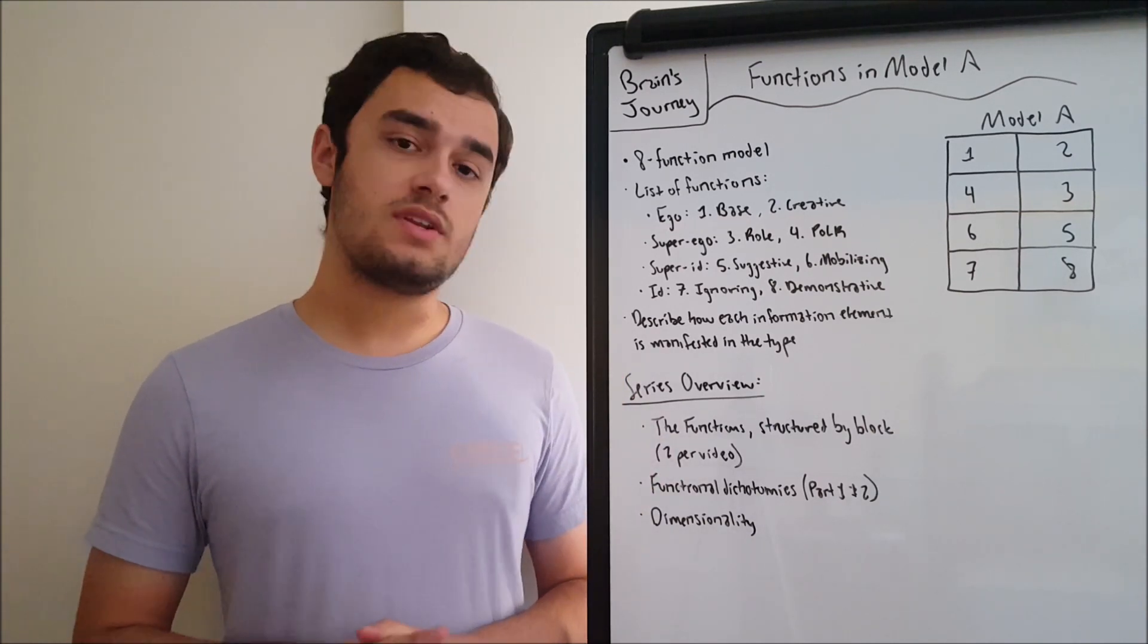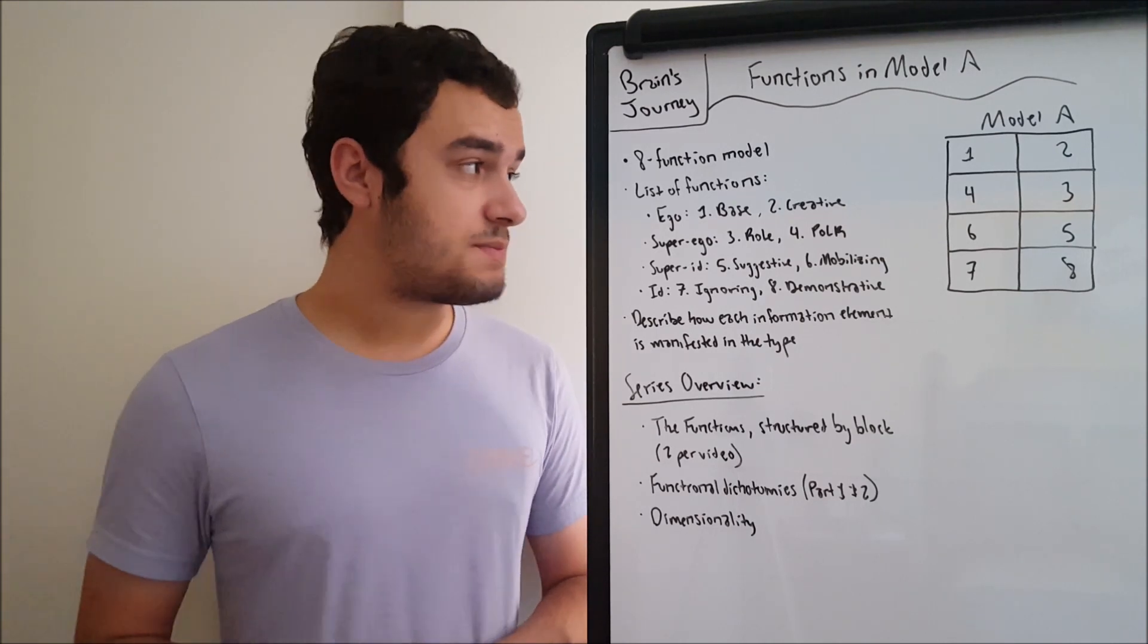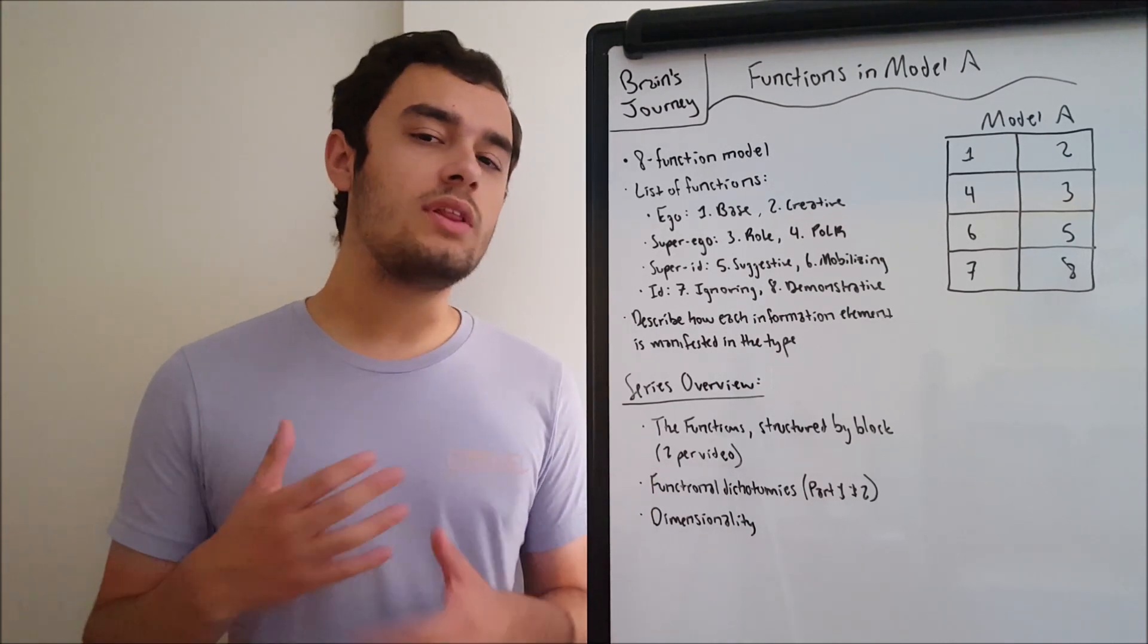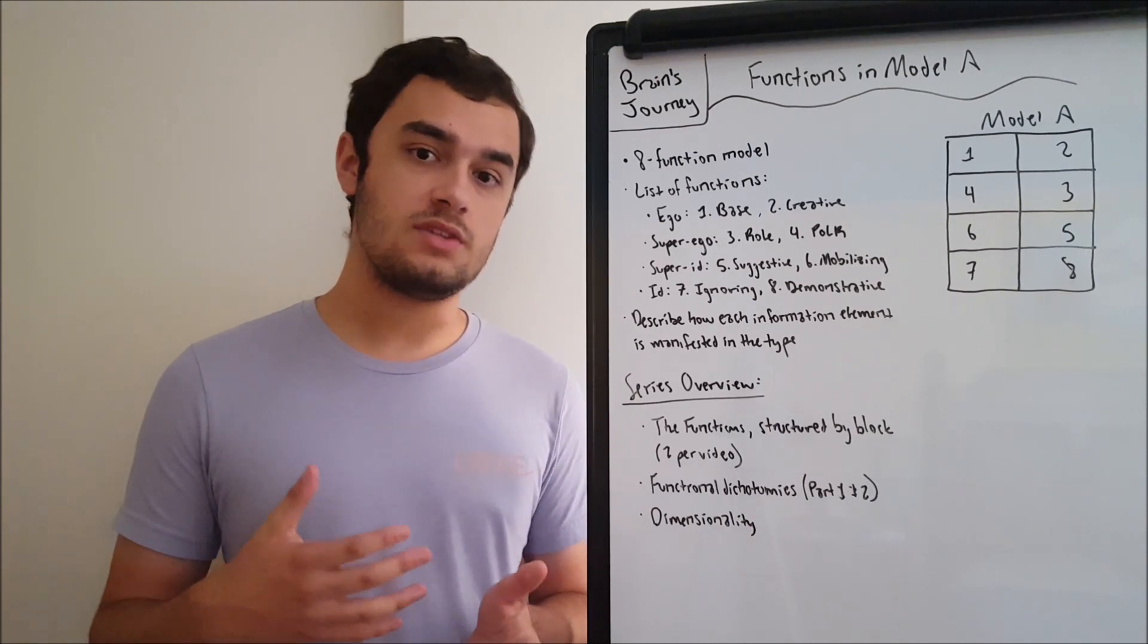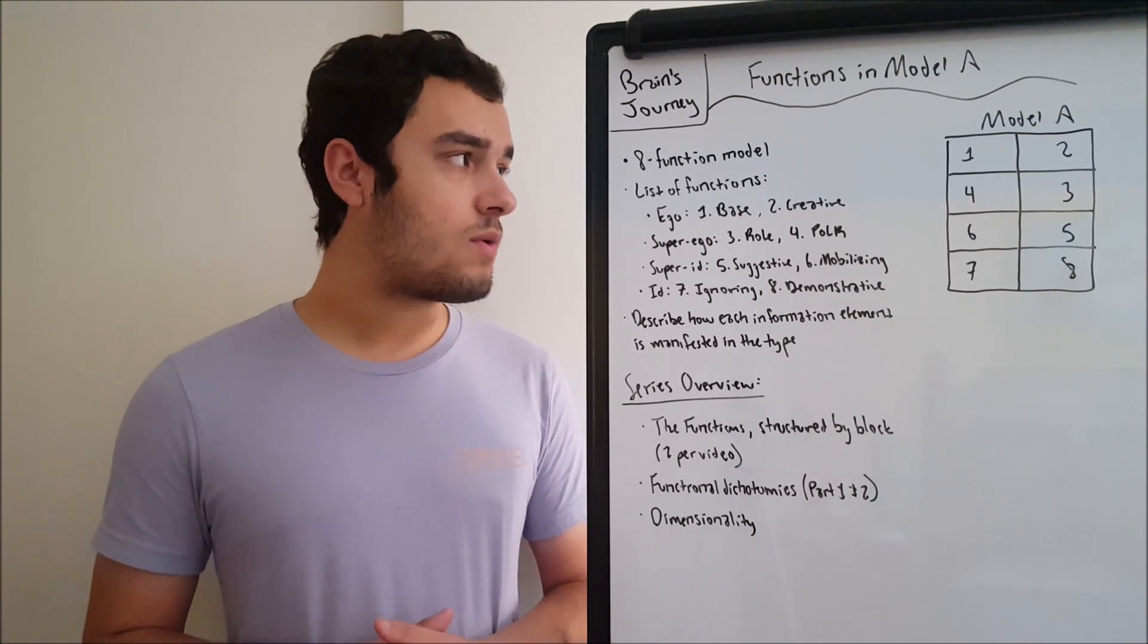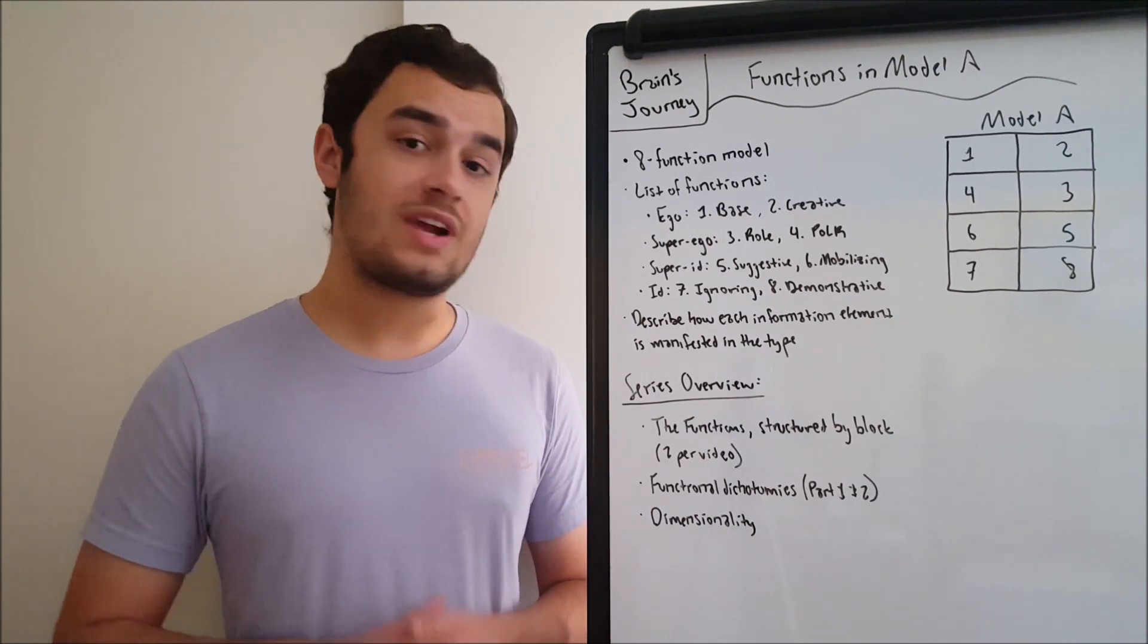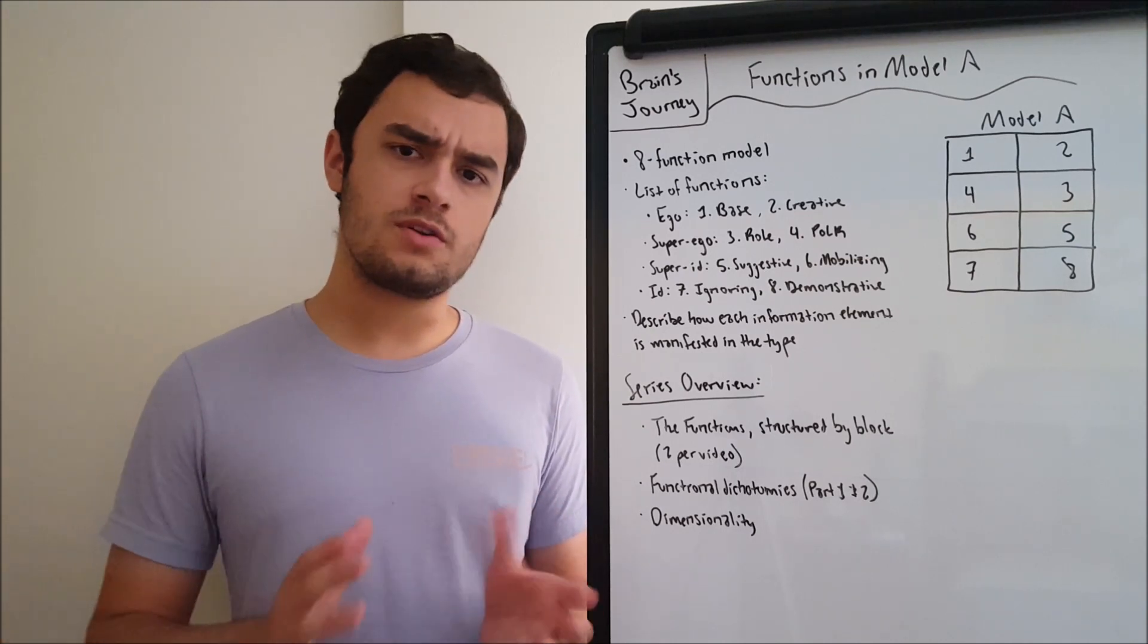The reason that this series is going to be structured a little differently is because the functions in Model A don't really compare too much to the functions of the MBTI, John Beebe, or Talking with Famous People. They're very different, and so I'm not going to translate between models because I feel like that just leads to further confusion.